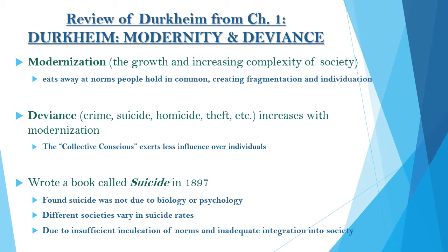Deviance will come back in a whole chapter in a few weeks, but deviance is anything that goes against the social norms of acceptability. Durkheim viewed deviance as an offshoot of modernization because the collective conscience exerts less influence over people. People don't see themselves as tied to social norms and morals anymore, so more crime, theft, and other instances of deviance start to explode with modernization.